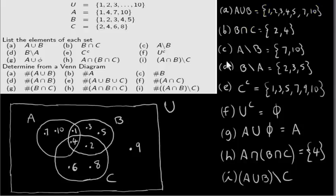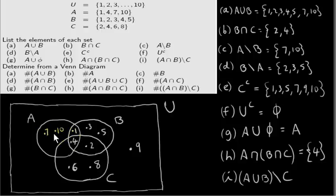As for B intersection C, we look at the elements that are in both B and C. There are two elements that are in both sets — those two elements are four and two. A less B is got by looking at set A and removing B from it. So if we remove B from set A and write down what's left, we just have the elements three and five — they're the elements in B that are not in A.